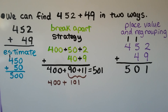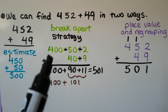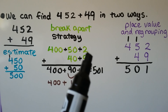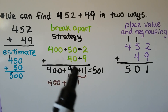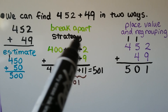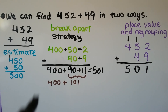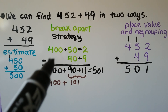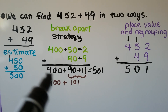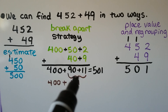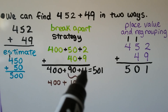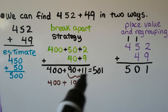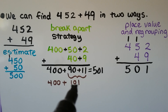Using the break apart strategy, we break 452 into expanded form: 400 plus 50 plus 2, then add 40 plus 9. We start with the largest place value: 400. Then 50 plus 40 is 90, and 9 plus 2 is 11. The 90 plus 11 is equal to 101. When we add that to the 400, we get 501, which is very close to our estimate.